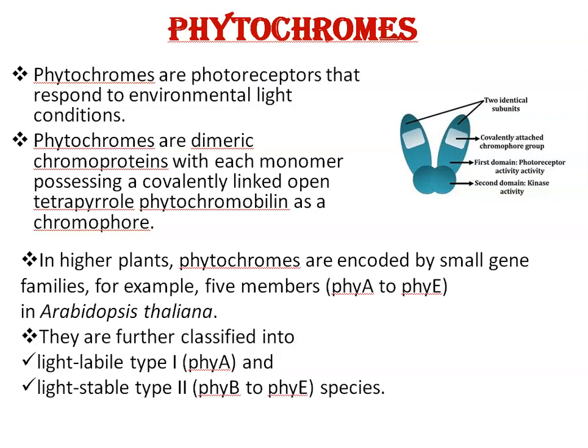Phytochromes are further classified into two types: light labile Type 1, which is Phytochrome A, and light stable Type 2, which includes Phytochrome B through E. Among all, Phytochrome A is responsible for sensing far-red light, and Phytochrome B through E play roles in red light-mediated photomorphogenic development.